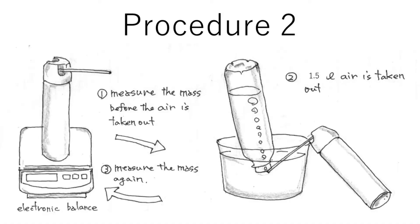Procedure 2: Measure the mass of the can before and after taking out 1.5L of air.